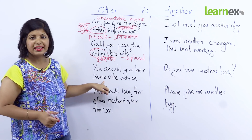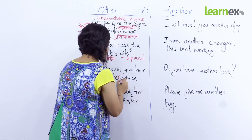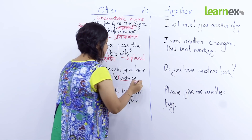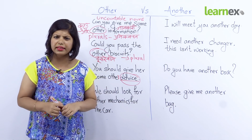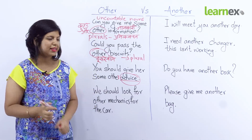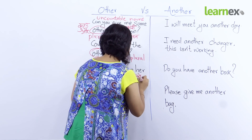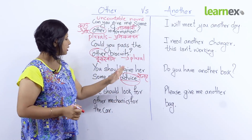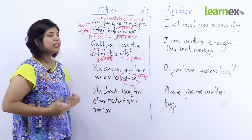Next sentence hai: 'You should give her some other advice.' Yaani aapko usse kuch aur salaah deni chahiye. 'Advice' ka matlab hai salaah — ab advice ya salaah ko kya aap gin sakte hain? Ek salaah, doos salaah — nahi, yeh uncountable noun hai jo gina nahi ja sakta. Toh yehaan pe aap yeh nahi keh sakte: 'You should give her another advice.' No — 'You should give her some other advice.' Yeh correct hai.